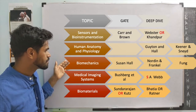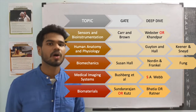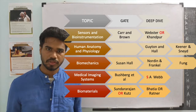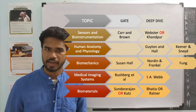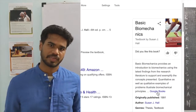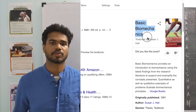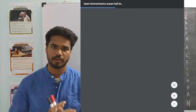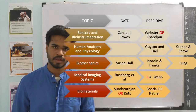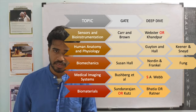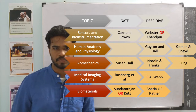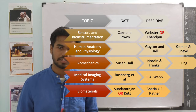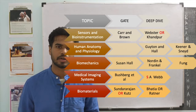For Biomechanics, the classic books are by Prof. Y.C. Fung, but unfortunately they are at a graduate level and not necessarily useful for GATE preparation. The book I suggest is by Susan Hall — a basic undergraduate-level book covering basic kinematics, types of joints, levers in the human body, and simple problems on force and moment equilibrium based on body biomechanics. For a deep dive, I suggest the book by Nordin and Frankel, primarily used by clinicians and orthopedic surgeons.